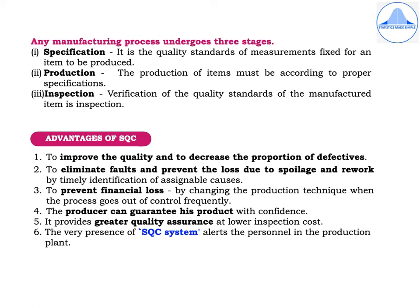Any manufacturing process undergoes three stages. The first stage is specification — the quality standards of measurements fixed for an item to be produced. The second stage is production, where items must be manufactured according to proper specifications. The third is the inspection stage, where we verify that the quality standards of the manufactured item are met.